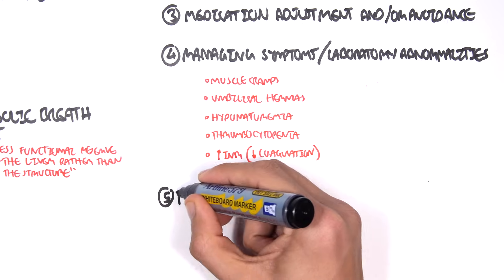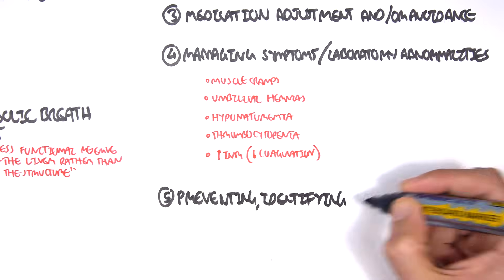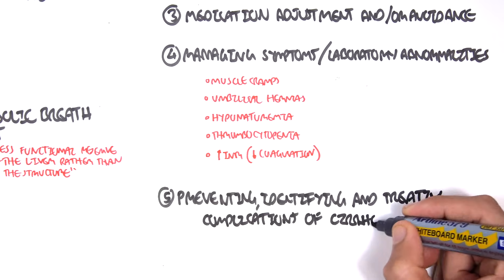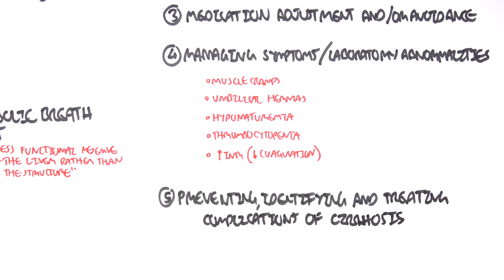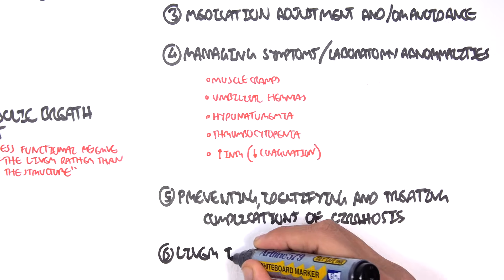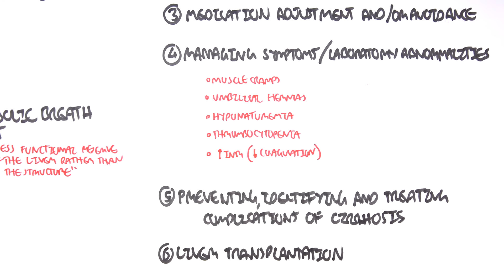Management also includes preventing, identifying, and treating the complications of cirrhosis, which we talked about earlier, including peritonitis, ascites, hepatopulmonary syndrome, et cetera. Finally, the last management would be liver transplantation, if all else fails.